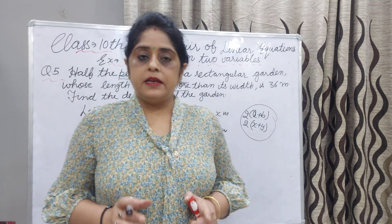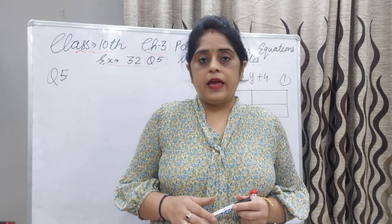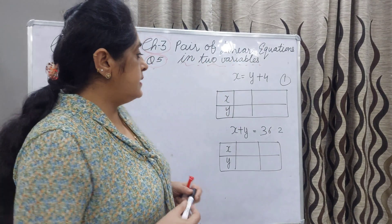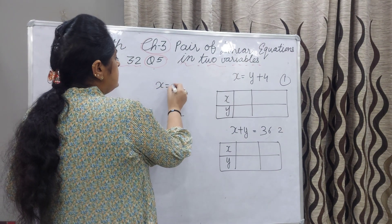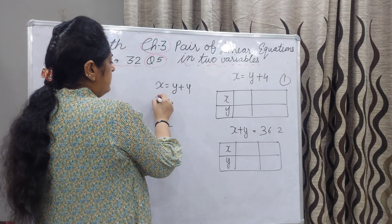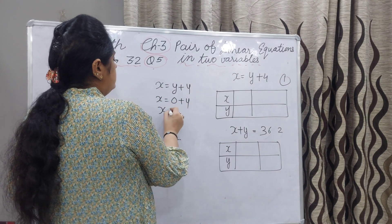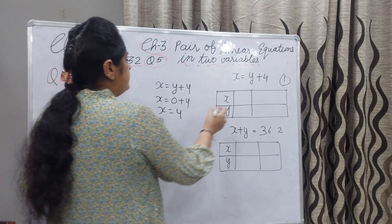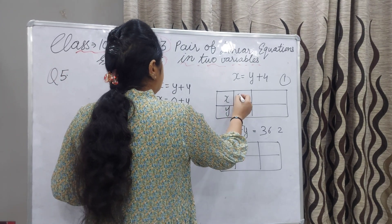Now we will make the table and put the values of x and y. Two values we will take. x is equal to y plus 4. First you can take y as 0. You will get the value x as 4. We have taken y 0, x 4.